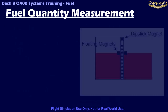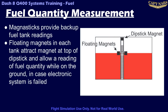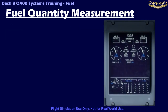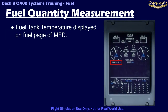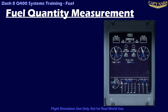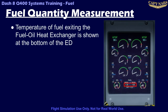A single magnetic dipstick is located on the underside of each main tank and provides a backup system for determining fuel quantity when the electronic system is unavailable. The temperature in degrees Celsius in each fuel tank is displayed on the fuel page of the MFD. The sensor for the fuel tank temperature is located in the left collector bay. Additionally, the temperature of the fuel as it exits the fuel oil heat exchanger is displayed on the ED.